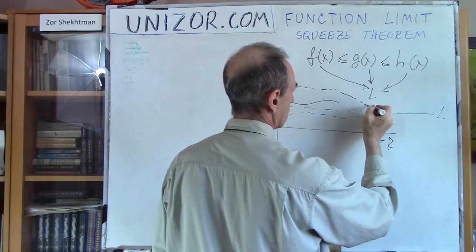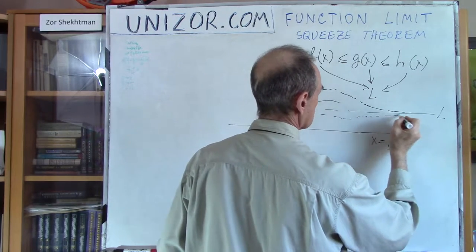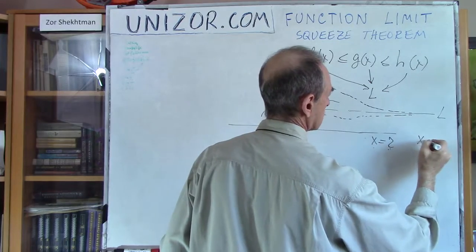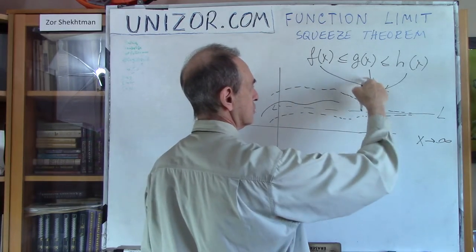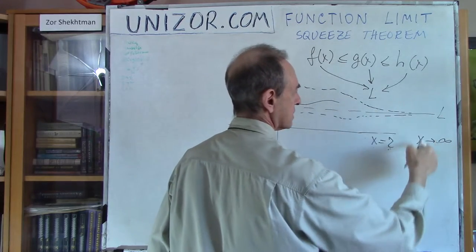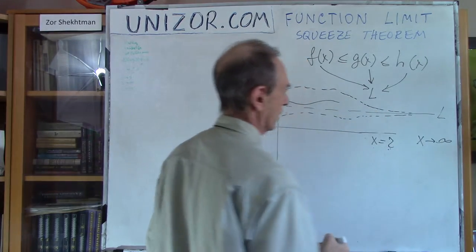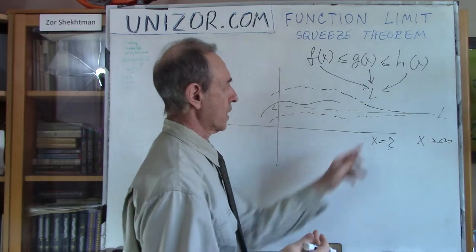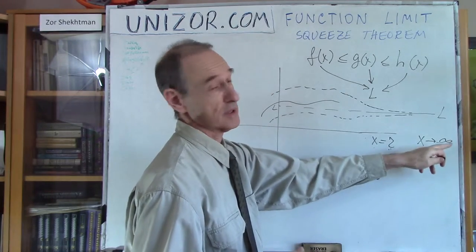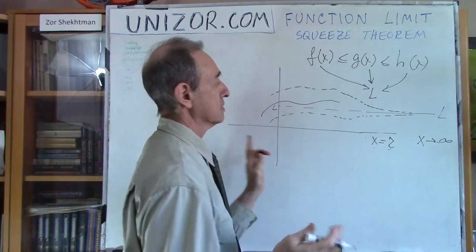So this function goes to level l and this function goes to level l as x goes to infinity then again g of x also will go to the same limit l. That's one of the variations of this when the argument goes to infinity obviously plus infinity or minus infinity it doesn't matter.